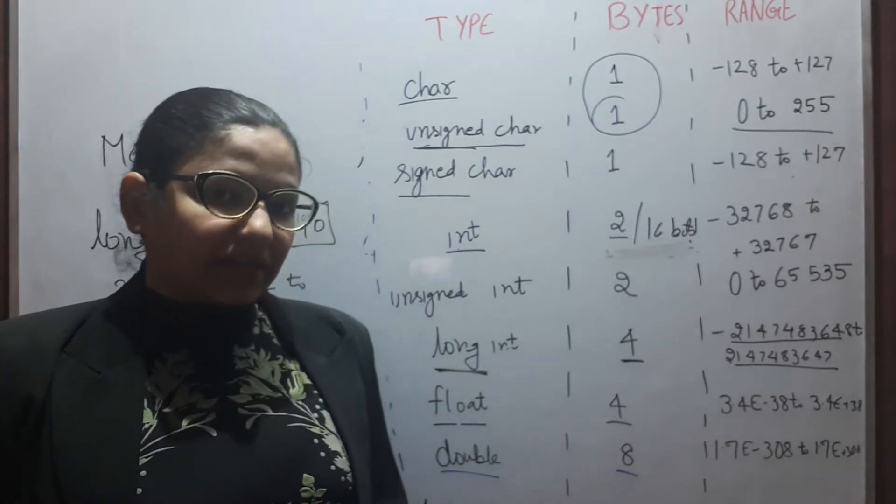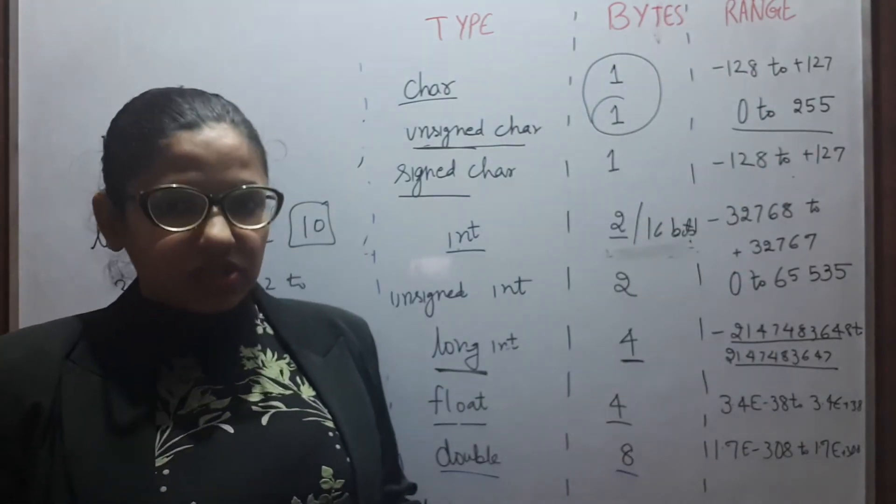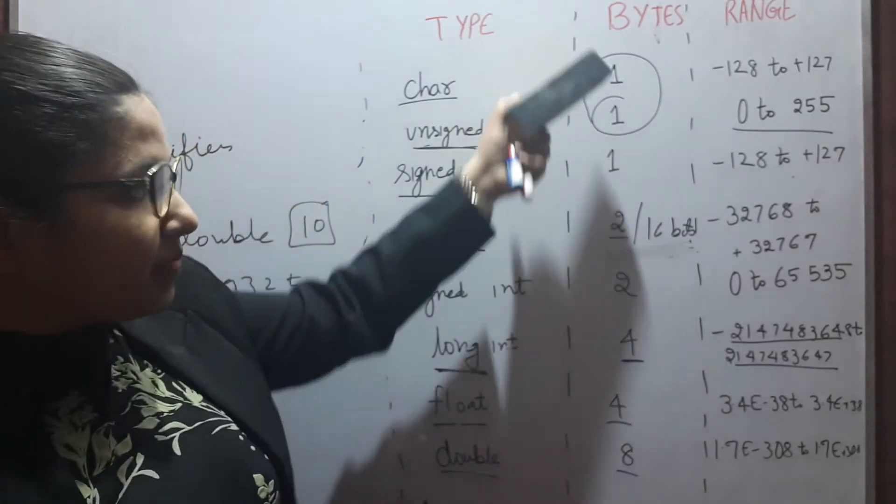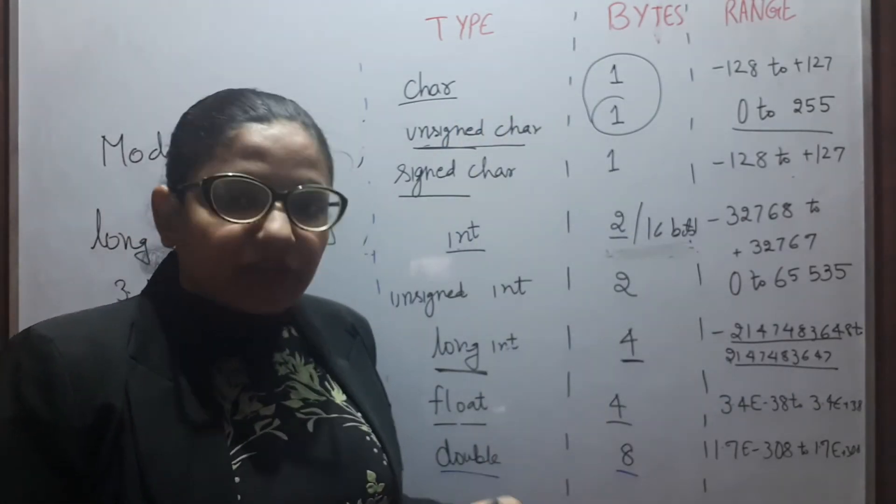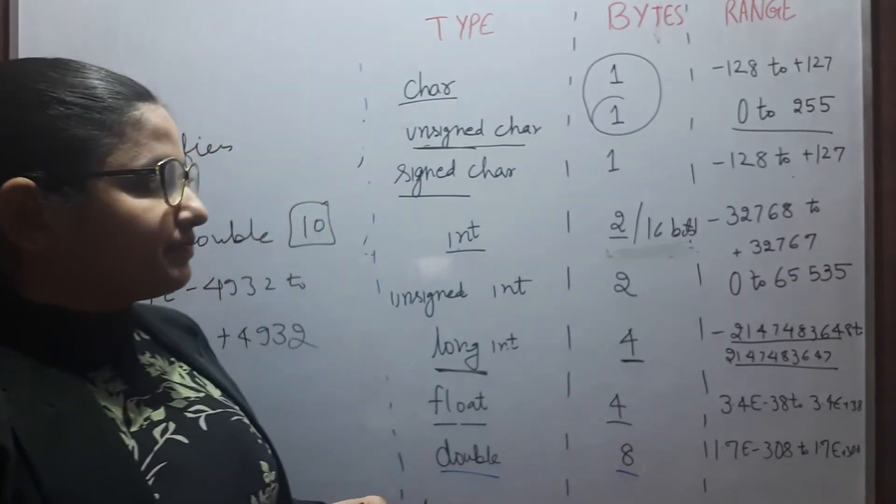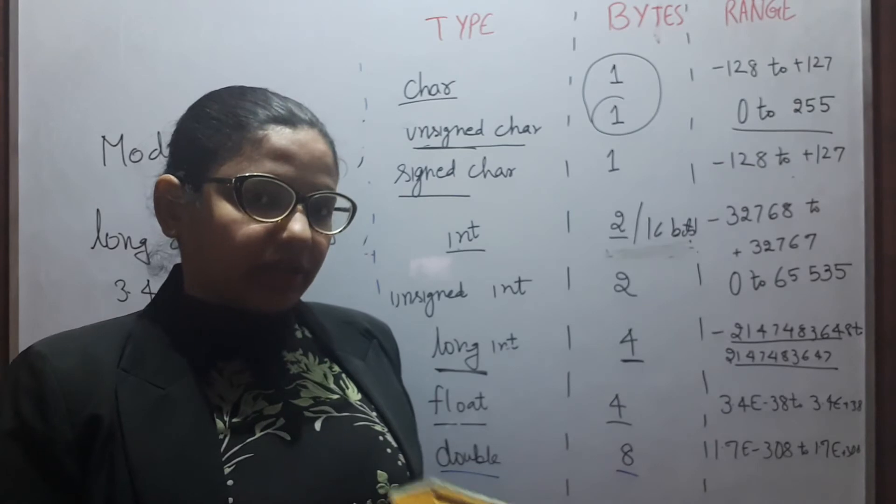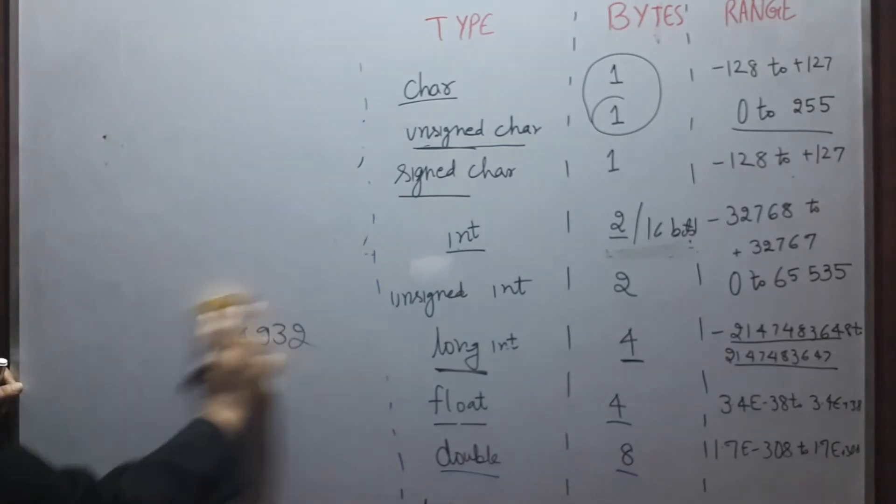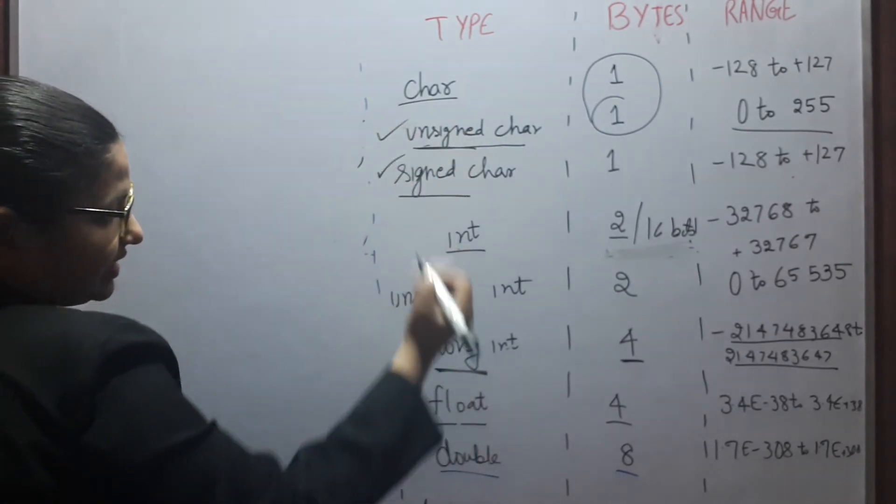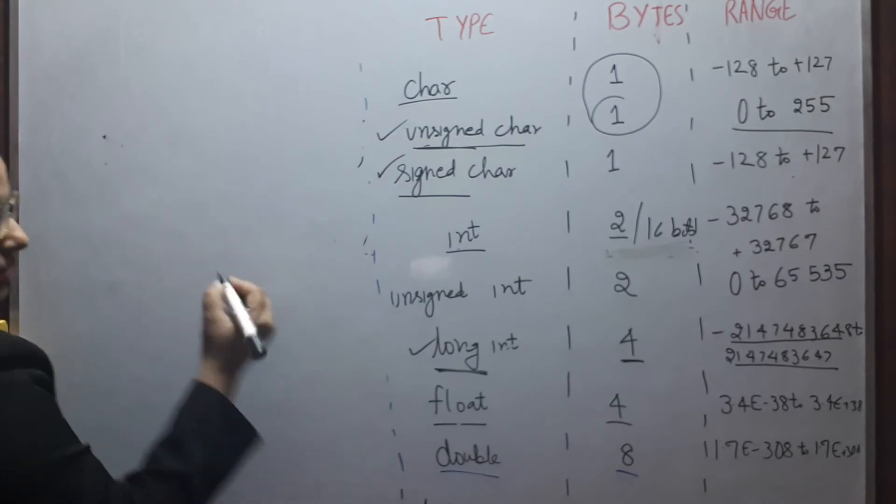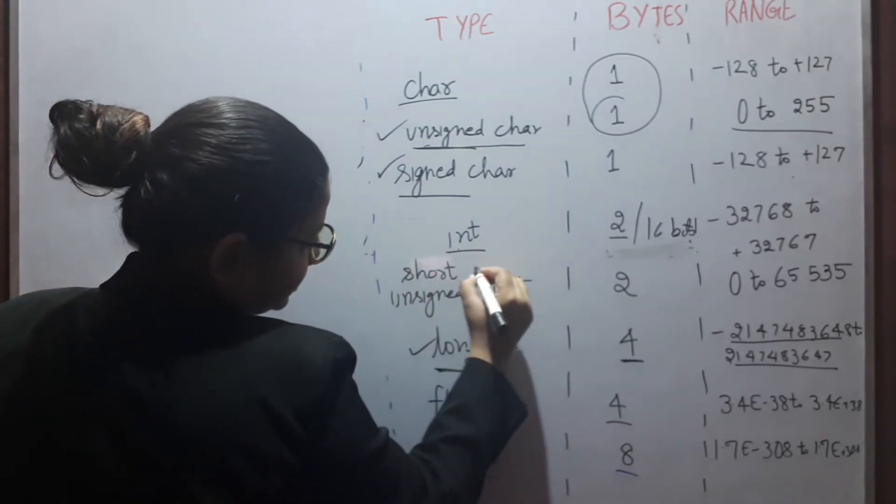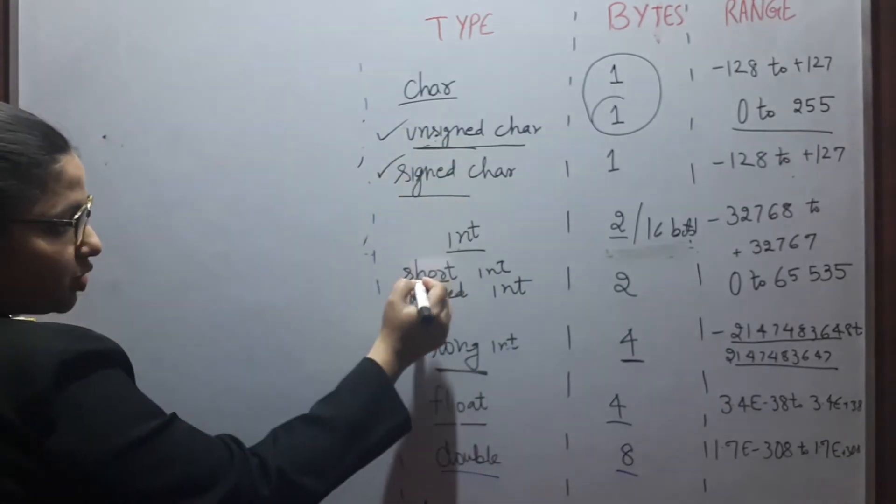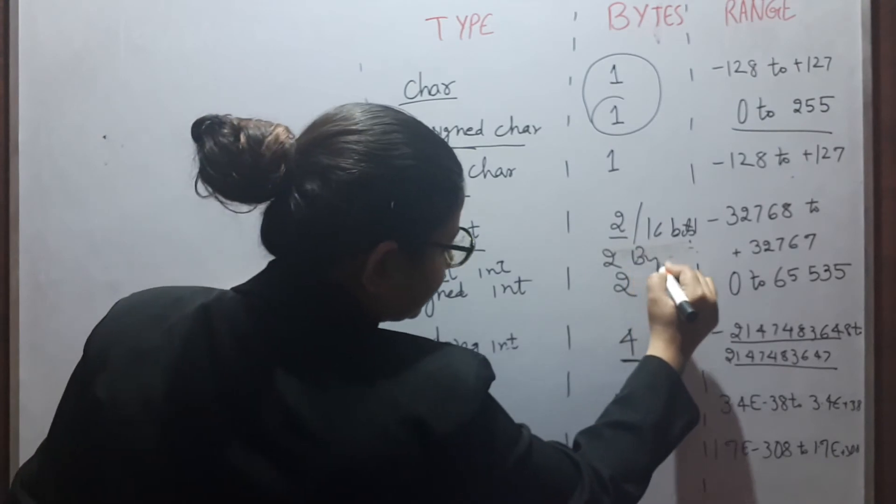In practical, for practicals, you are not supposed to remember range. But these are like general, so you will remember. But byte is the thing which you should always remember. Because it will come in your interviews or in your exams. So we have signed, unsigned, and long. Or there is one more modifier that is short int. Signed, unsigned, short, and long. Short int is also 2 bytes.